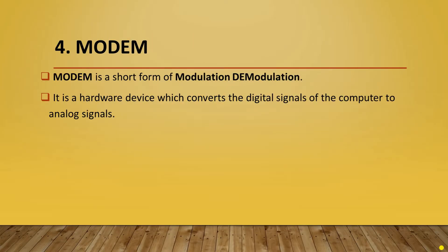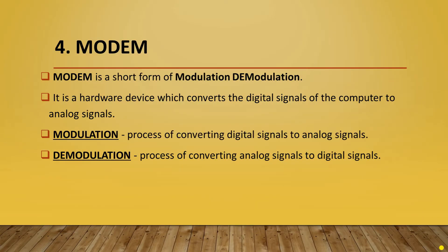Next is modem. Modem is a short form of modulation-demodulation. It is a hardware device which converts the digital signals of the computer to analog signals. Modulation is the process of converting digital signals to analog signals. On the contrary, demodulation is the process of converting analog signals into digital signals.